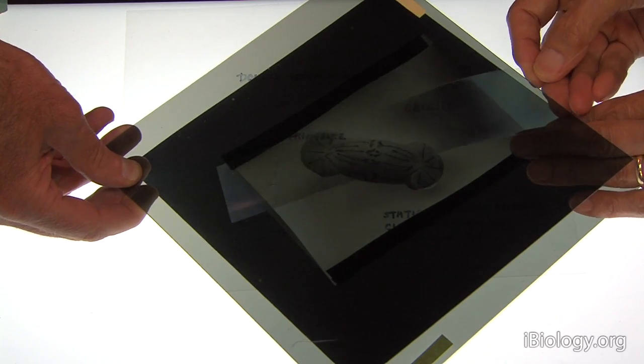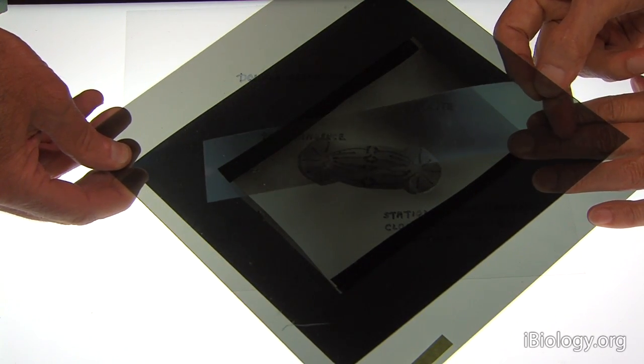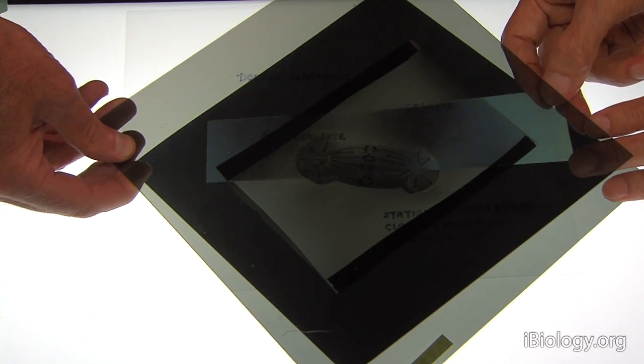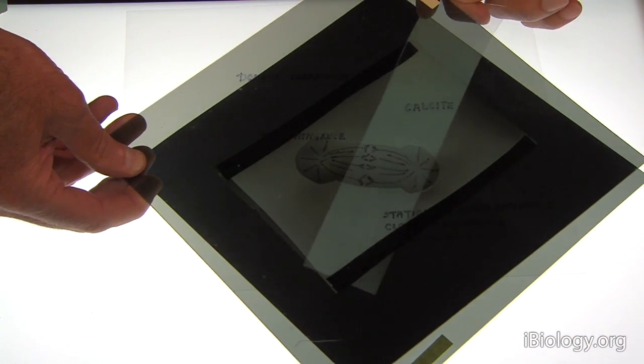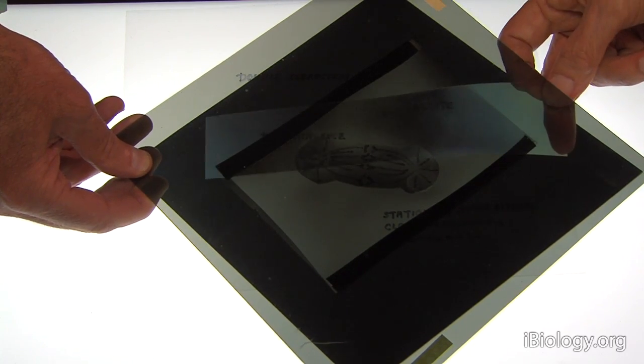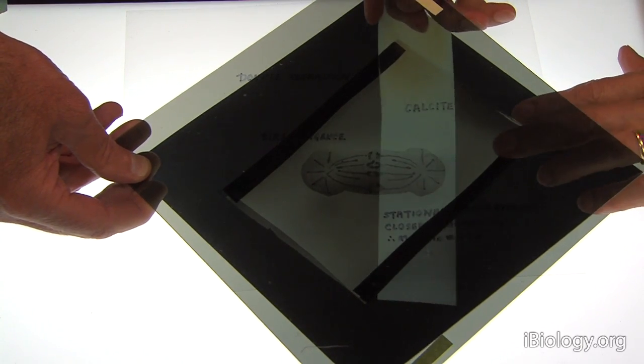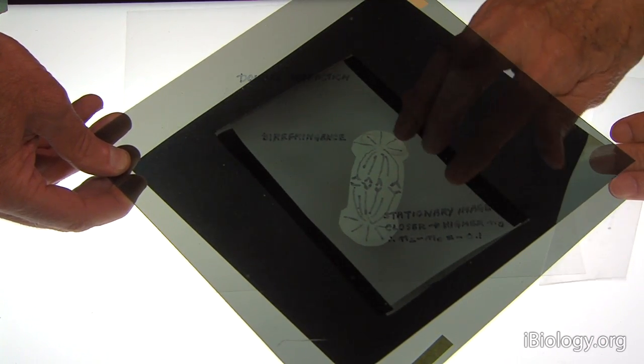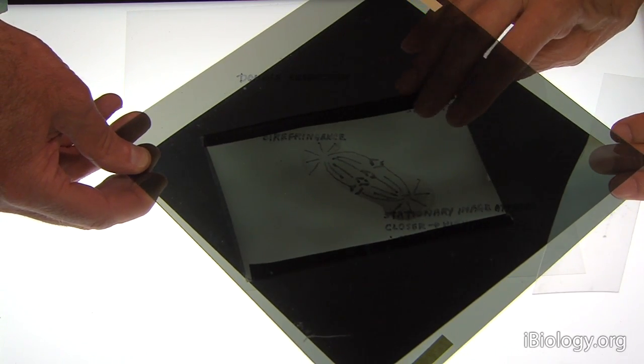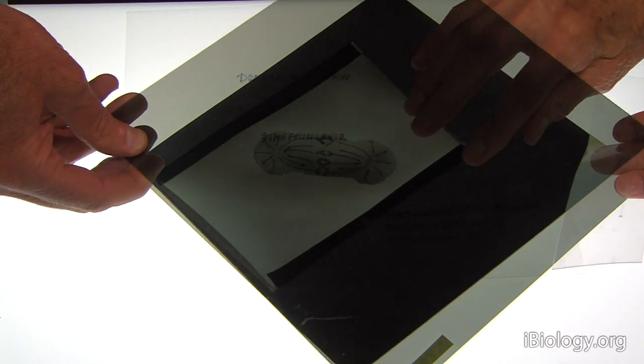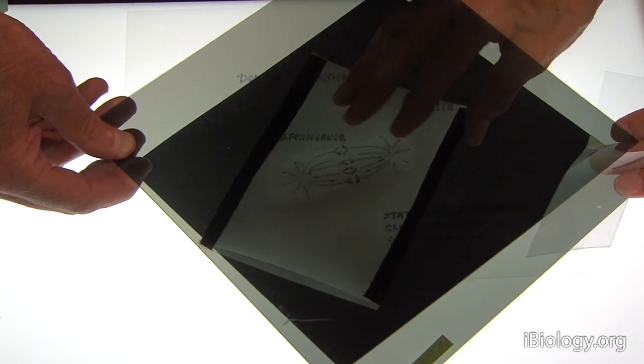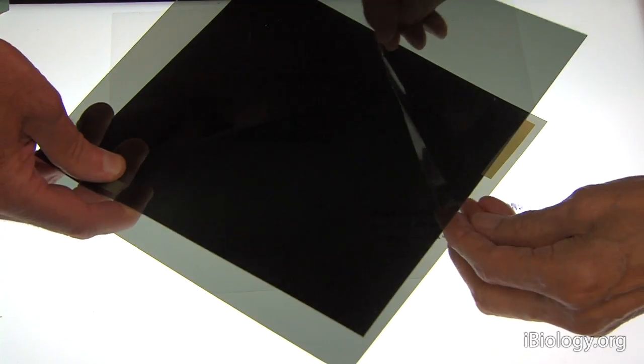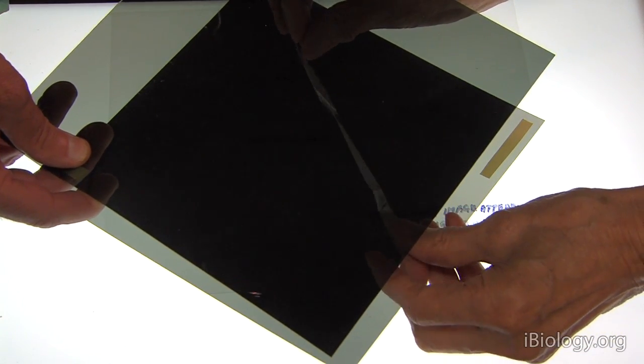So this is a model of a mitotic spindle which is weakly birefringent. In fact, the birefringence is only a few hundredths or thousandths of the birefringence of the calcite crystal you saw. So we need this compensator in order to see which way the molecules are lined up and how the birefringent material itself behaves, just like the calcite crystal, depending on the orientation of the material.